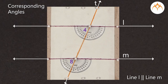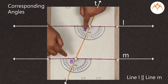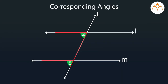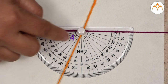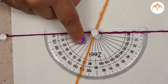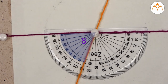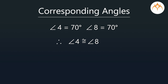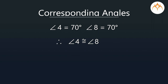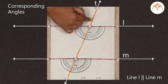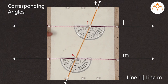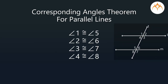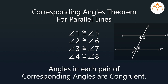Now let us see the last pair of corresponding angles — angle 4 and angle 8. They are formed at these matching corners. Angle 4 measures 70 degrees and angle 8 also measures 70 degrees. So the measure of angle 4 is equal to angle 8, and angle 4 and angle 8 are congruent to each other. We can say that when a transversal cuts two parallel lines, we get four pairs of corresponding angles such that in each pair the measures of the angles are equal — or in other words, each pair of corresponding angles is of congruent angles.